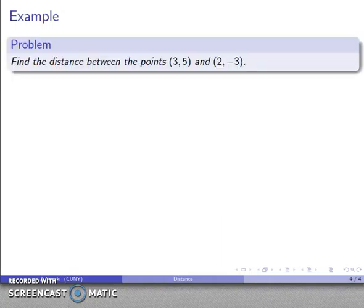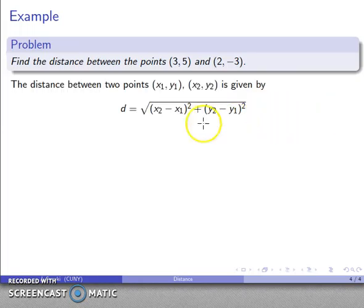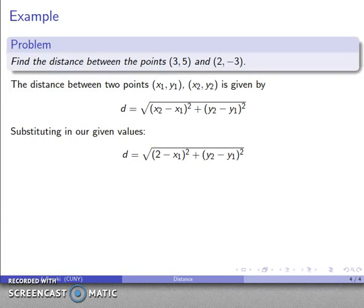So for example, let's say I have the point 3, 5 and the point 2, negative 3. Well, paper is cheap, so I'll go ahead and write down the distance formula. Then I'll substitute in the values that I have. So let's take a look at those values. I have x2, that's my second x-coordinate, that's 2. x1, that's my first x-coordinate, that's 3. y2, that's my second y-coordinate, that's negative 3. I'll substitute that in. y1, that's my first y-coordinate, that's 5. I'll substitute that in.